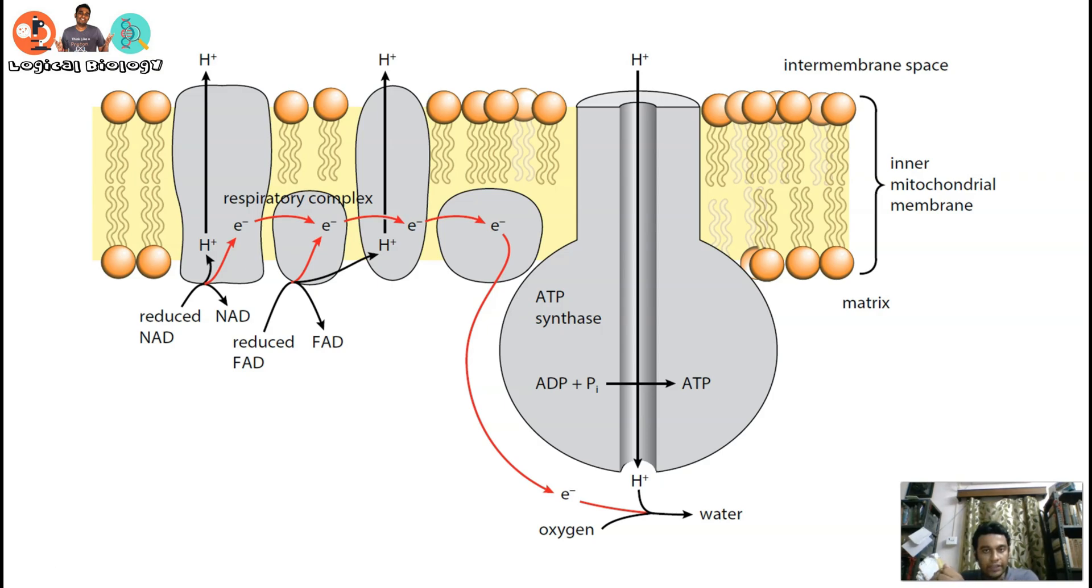Your ATP is ready. At the same time, oxygen is the final electron acceptor. As you can see in the diagram, it will accept the electron and also accept the proton which is coming from the intermembrane space.